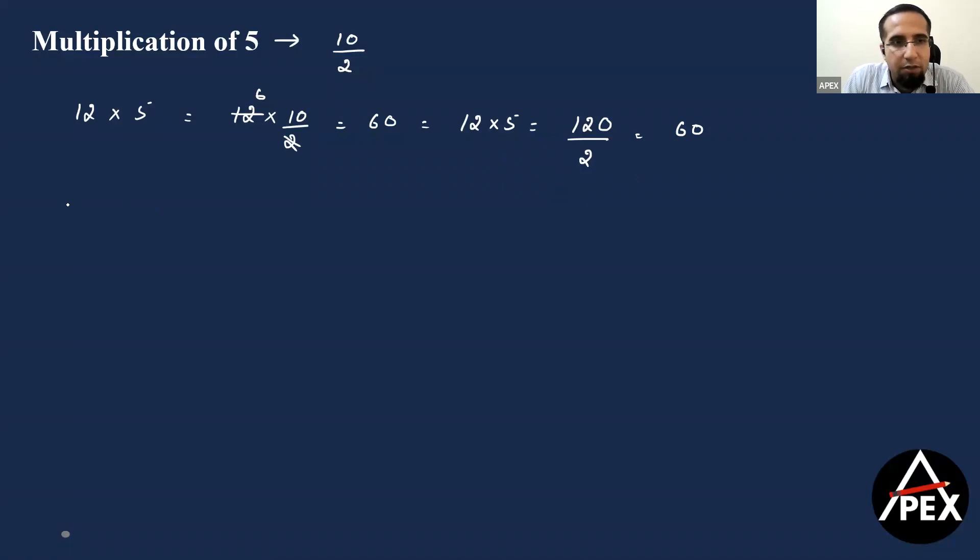Let's take another example. Suppose 27 into 5. All you have to do is write 270 divided by 2. 270 divided by 2 will give you 135 as the answer. So multiplication of 5 is nothing but into 10 by 2. Let's look at a three-digit number. Suppose 123 into 5. We should be quick at the division of 2. This becomes 1230 divided by 2, which gives you 615 as your answer. So multiplication of 5 becomes pretty easy.